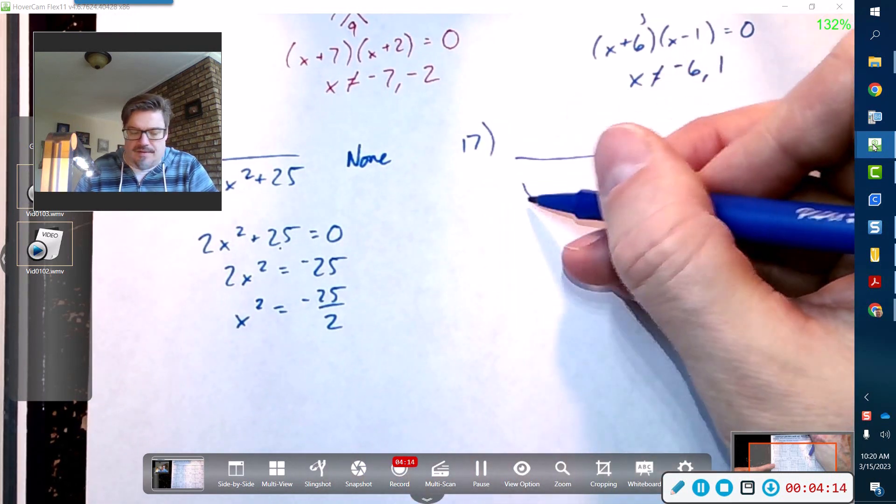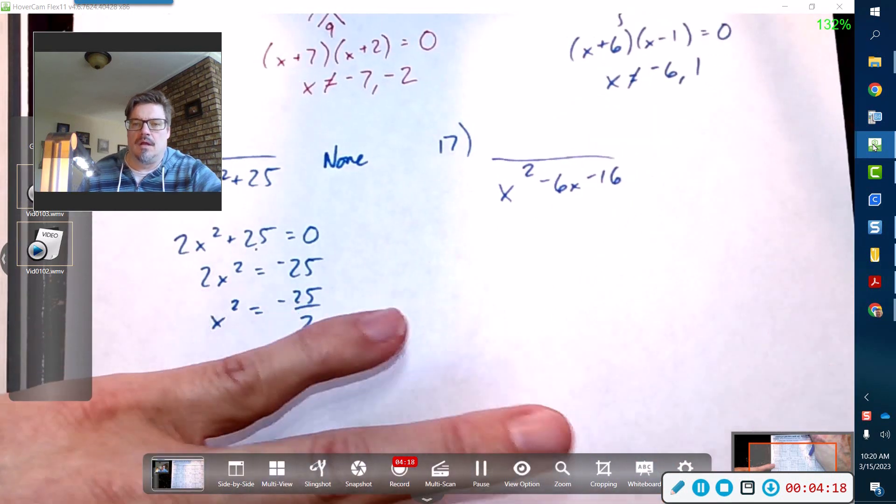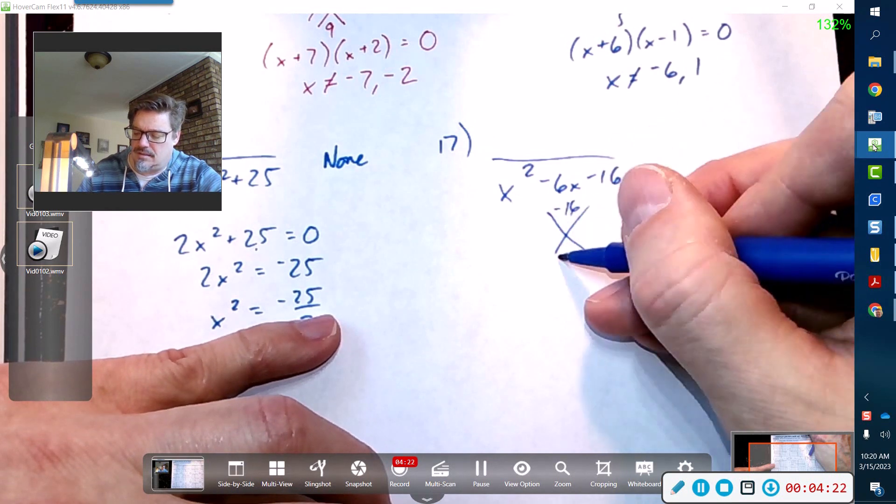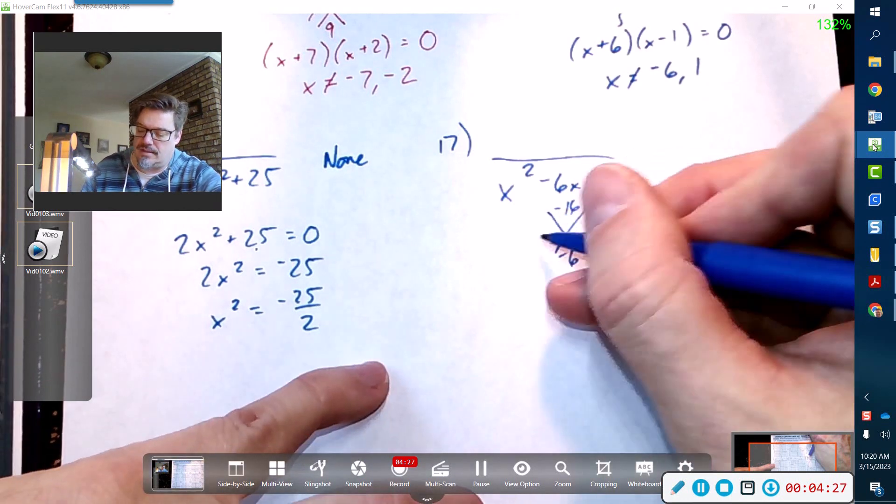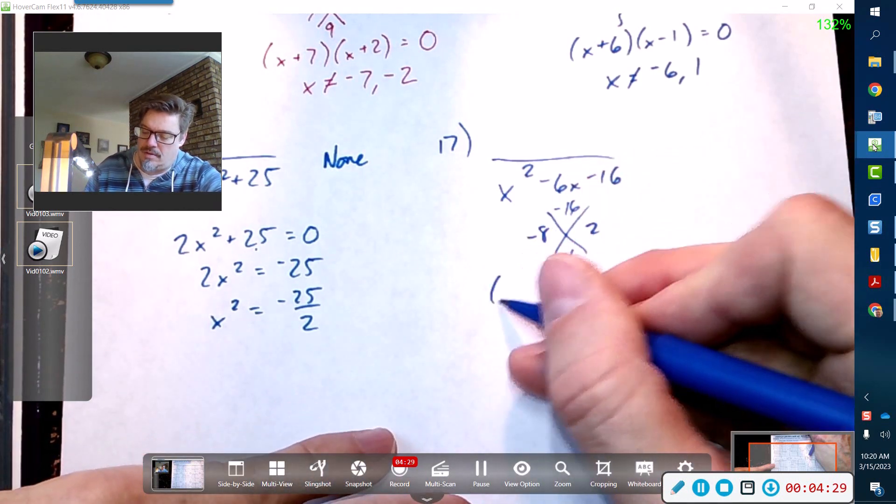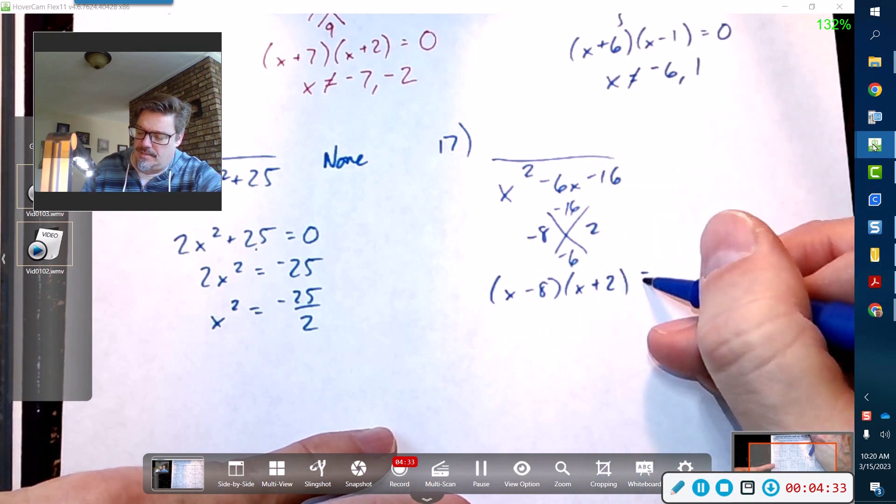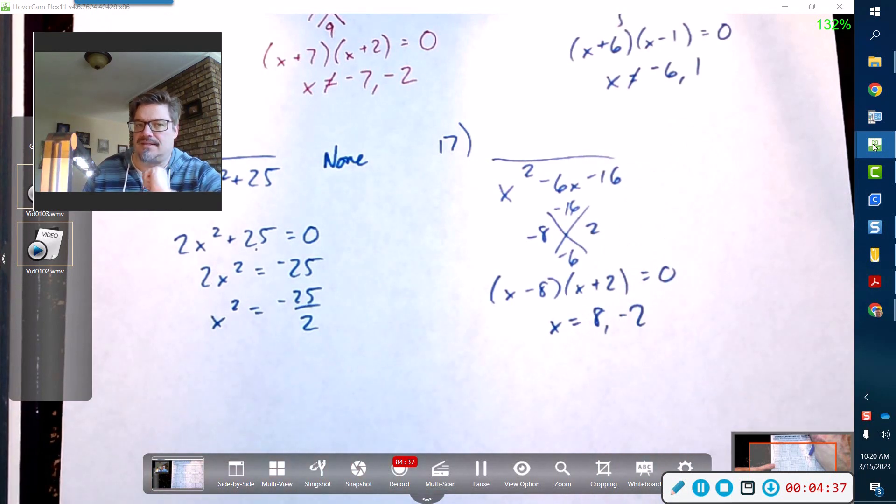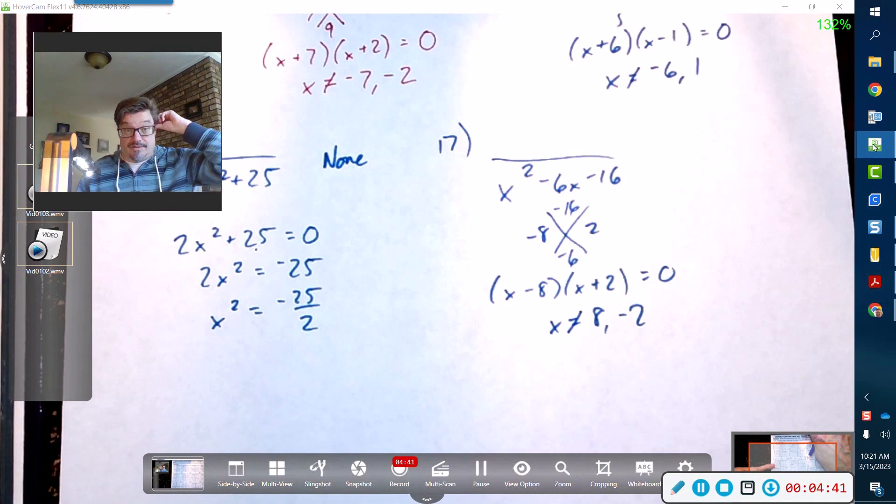Problem 17, again I'm going to focus on the denominator here. Factors of negative 16 that add up to 4: 16 and 2, so negative 8 and 2, there we go. Just make sure that's right, yep. So x equals 8 and negative 2, but what I really mean to say is that x cannot equal those because that would produce zero if I plug them in.